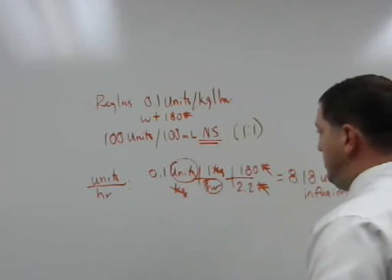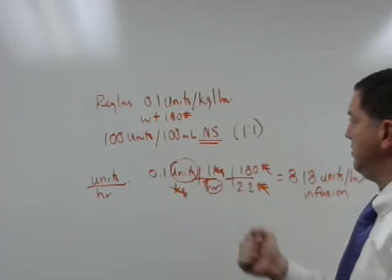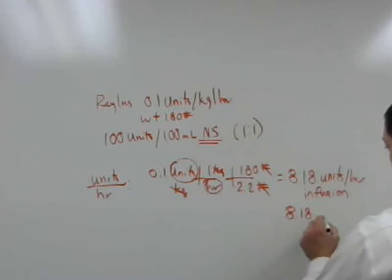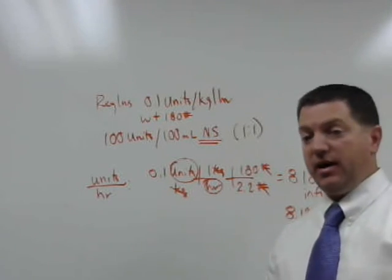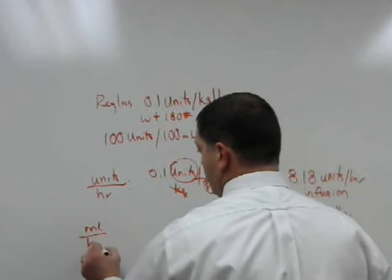Since we know that this is a one-to-one ratio, I can also then just say I have 8.18 ml per hour infusion. Just to verify that through the formula, let's go ahead and solve for ml's per hour.